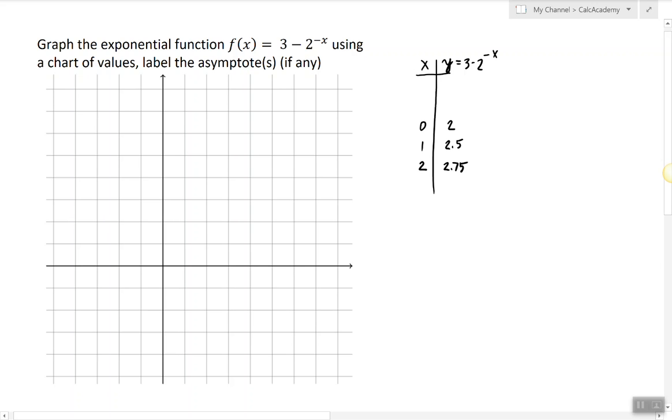So the larger x gets the closer the output is getting to the value 3 because we're subtracting something positive from 3.